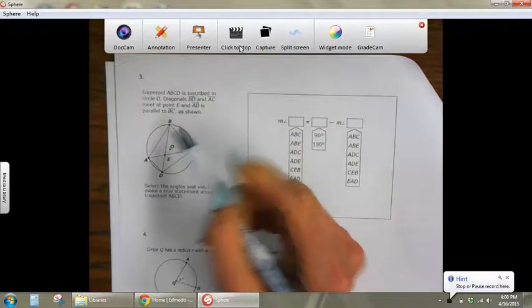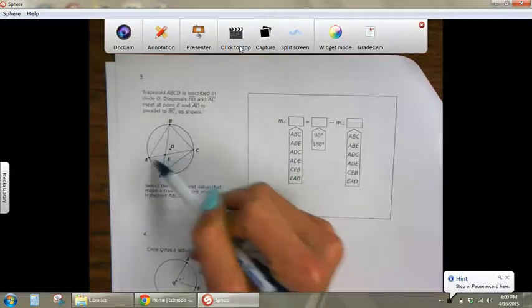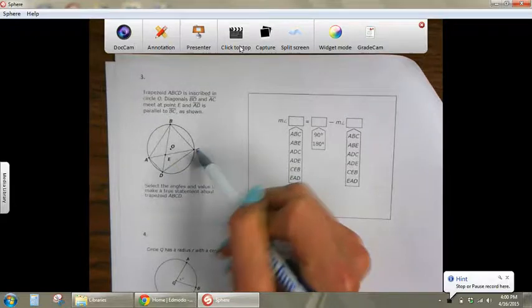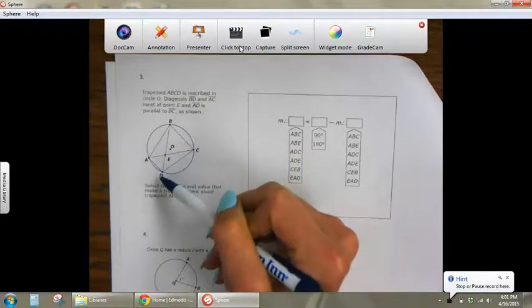So this angle where B is and this angle where D is, the full angle, A to D to C and A to B to C, those are actually supplementary and will add up to 180.